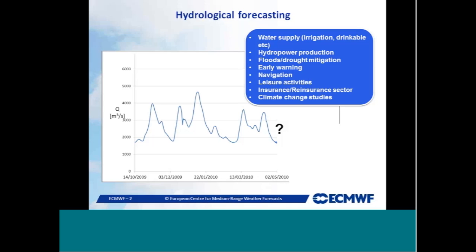Is it really difficult to do hydrological forecasting? No, it's quite easy — the problem is doing good hydrological forecasting. We can start from simple examples like taking a constant value, which is trivial and used in many verification scores as a benchmark; it works for the first time step but is not a reasonable approximation beyond that. We can also use climatological values and trends from historical station records.